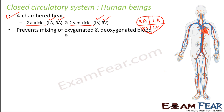It is very important that oxygenated and deoxygenated blood do not mix with each other. Oxygenated blood is rich in oxygen, while deoxygenated blood is rich in carbon dioxide. Oxygenated blood is needed by each and every cell of our body, whereas deoxygenated blood carries carbon dioxide away from those cells. To keep these two types of blood separate, we have different chambers.